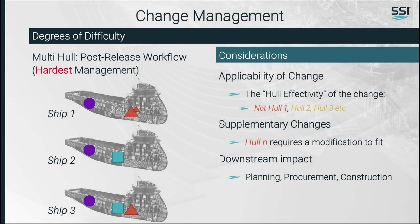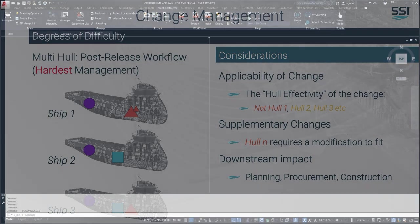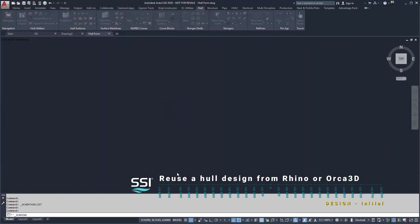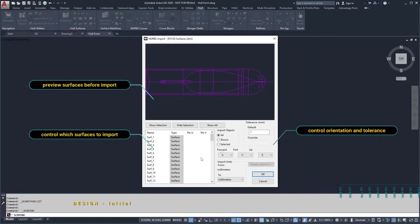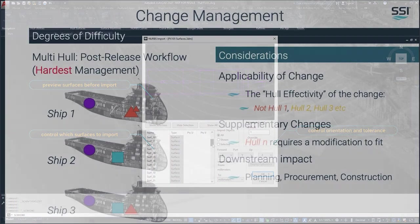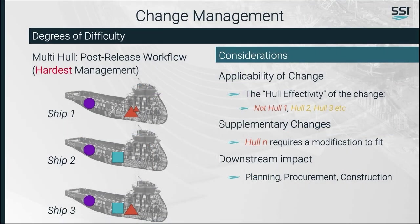The downstream impacts all need to be understood and tracked. To overcome these challenges, we need to reuse existing modelling work and incorporate changes and improvements to follow-on ships. In the example here, the circle change made to ship 1 is applicable to all ships. The blue square change made to ship 2 is applicable to the follow-on ships. The triangle change made to ship 3 needs to be made to ship 1; however, because the square change affects the arrangement, the triangle change requires supplementary changes.